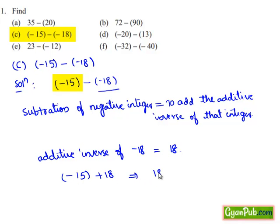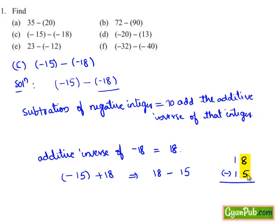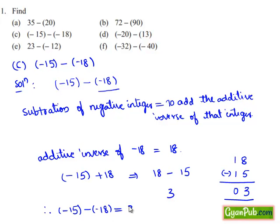It can be written as 18 minus 15. Since 18 is greater than 15, we can subtract directly: 8 minus 5 is equal to 3, 1 minus 1 is equal to 0, we get 3. So the solution of minus 15 minus of minus 18 is equal to 3.